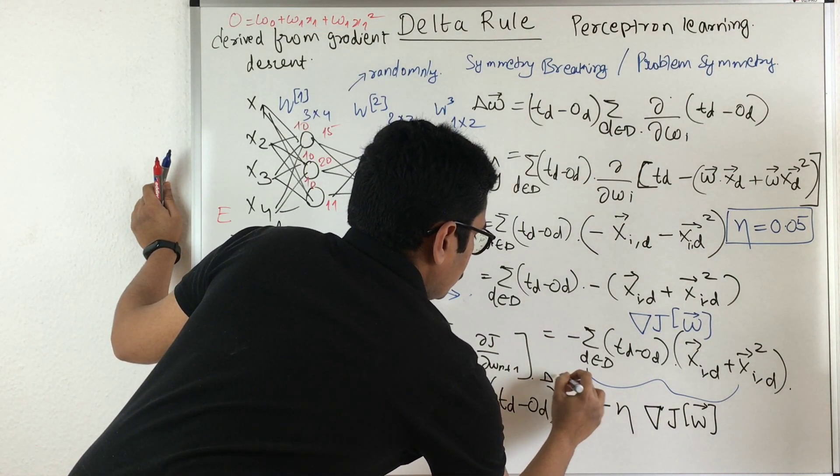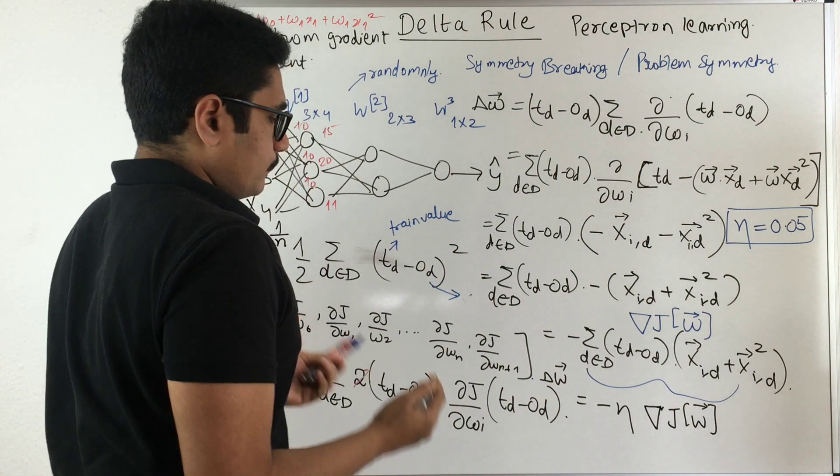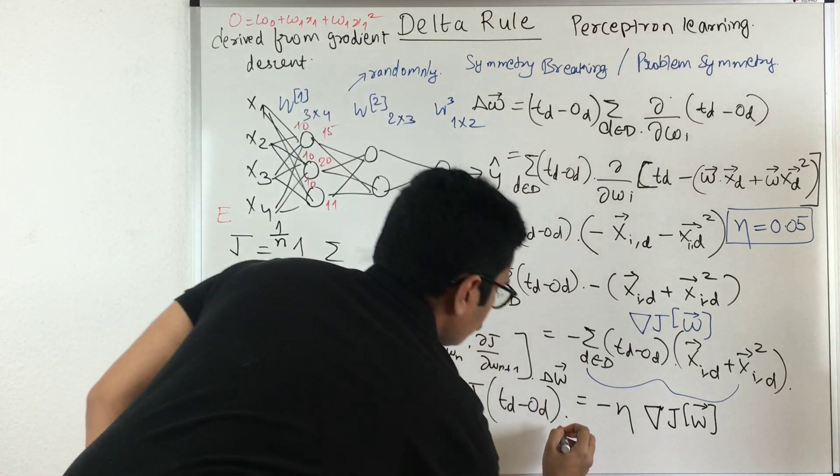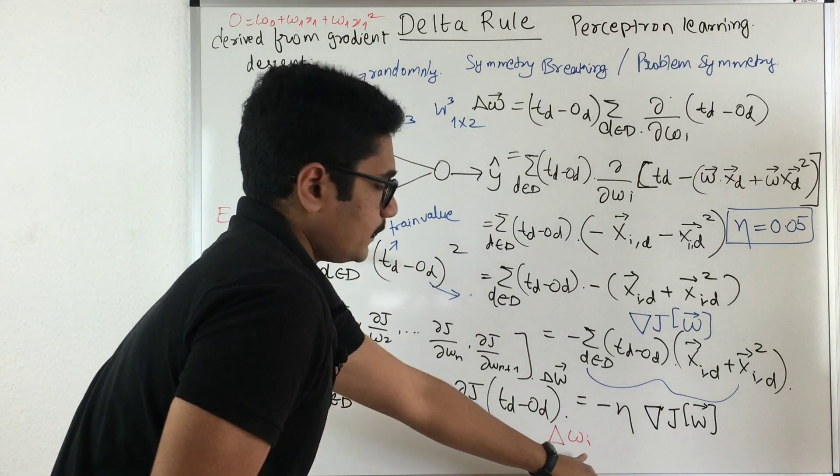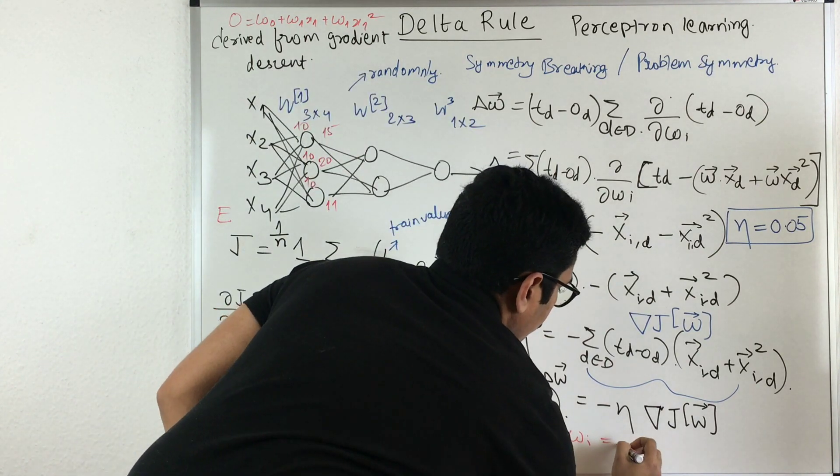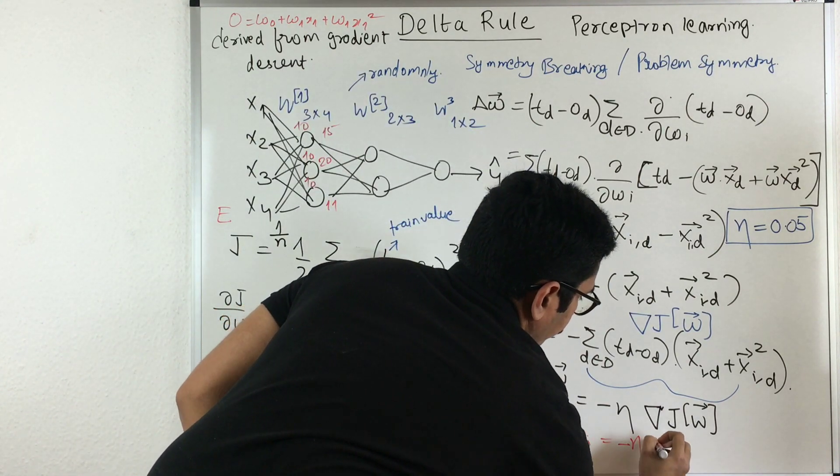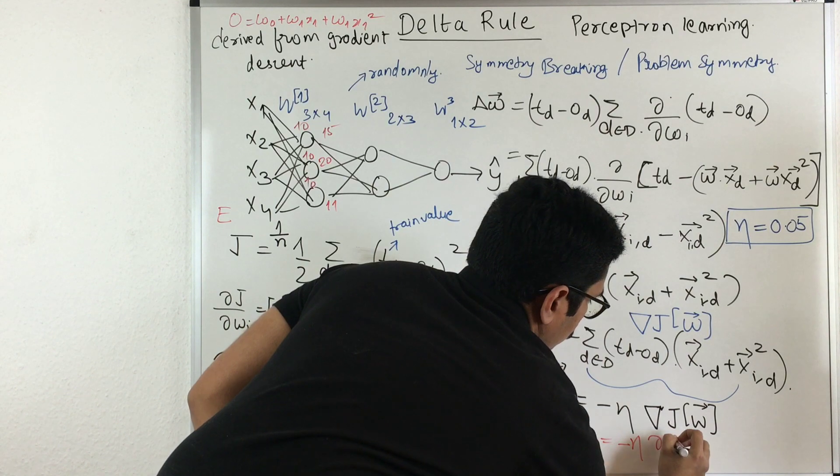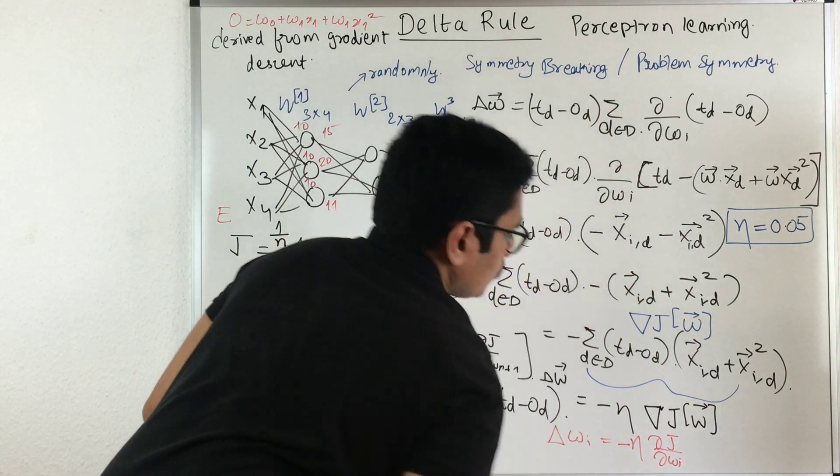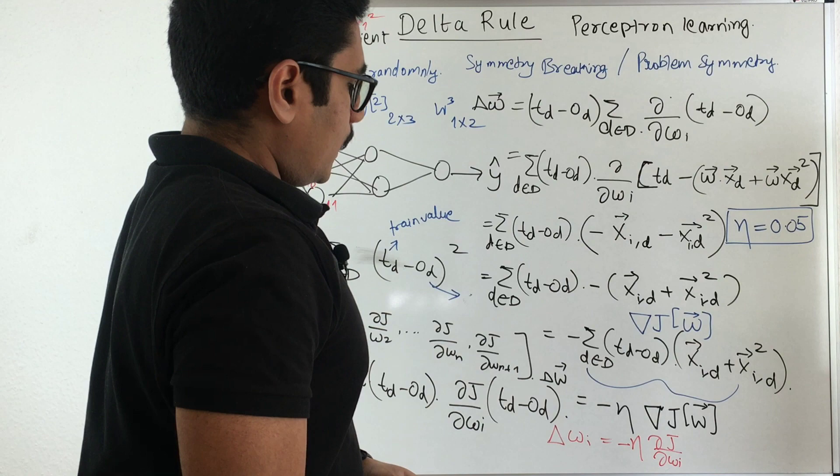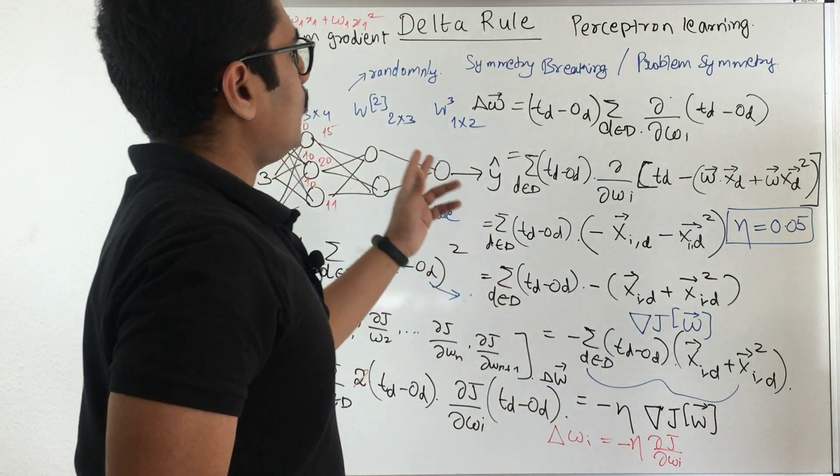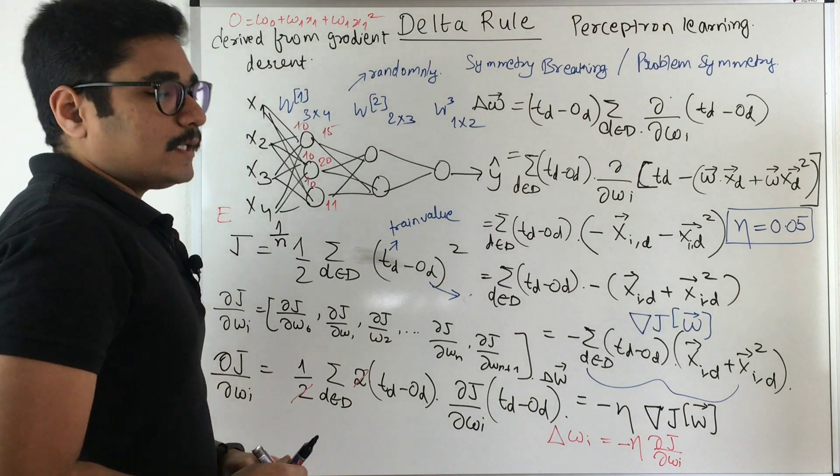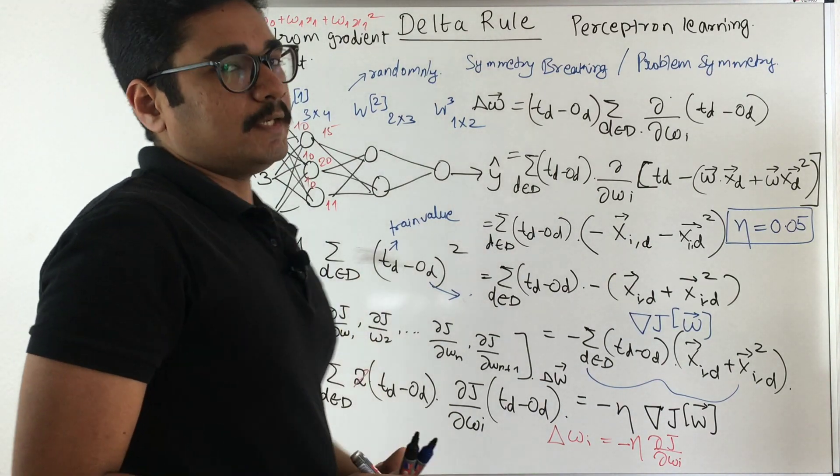So this was our delta w weight vector or in fact, if you want to represent in some other notation with respect to wi, how you can represent this minus eta and you have del J by del wi. So you can represent in either of the way for delta rule for learning perceptron. Well, that was all regarding the delta rule for perceptron learning and deep learning.